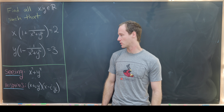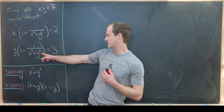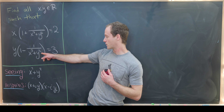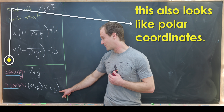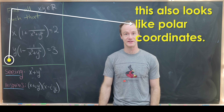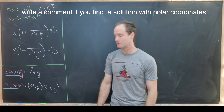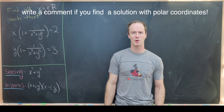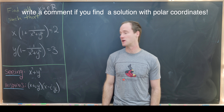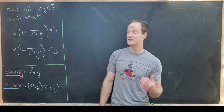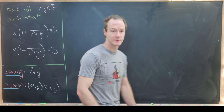Now how might we approach this? The fact that we see x² plus y² inspires the factorization (x + iy)(x − iy), so perhaps we should be thinking about complex numbers. And it turns out that will provide a really nice solution.